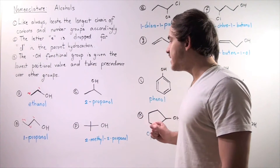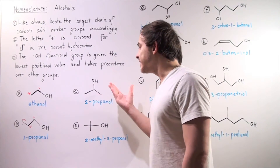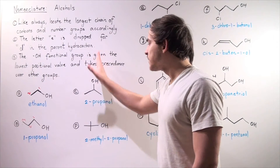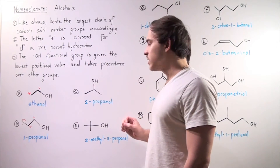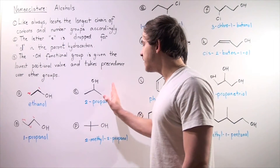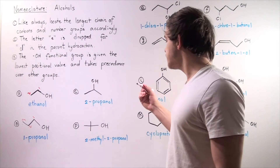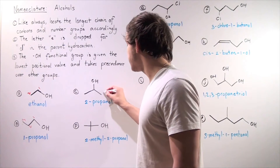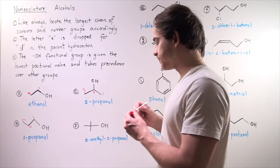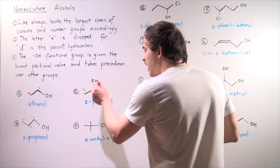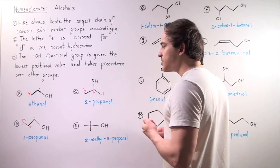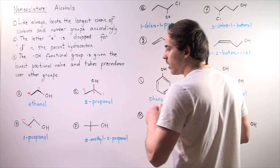Example C: once again, we begin labeling. This compound is symmetrical, and that means it does not matter if we begin on this end or that end. So let's begin on this end: one, two, three. Our hydroxy group is on the second carbon, so we get 2-propanol.